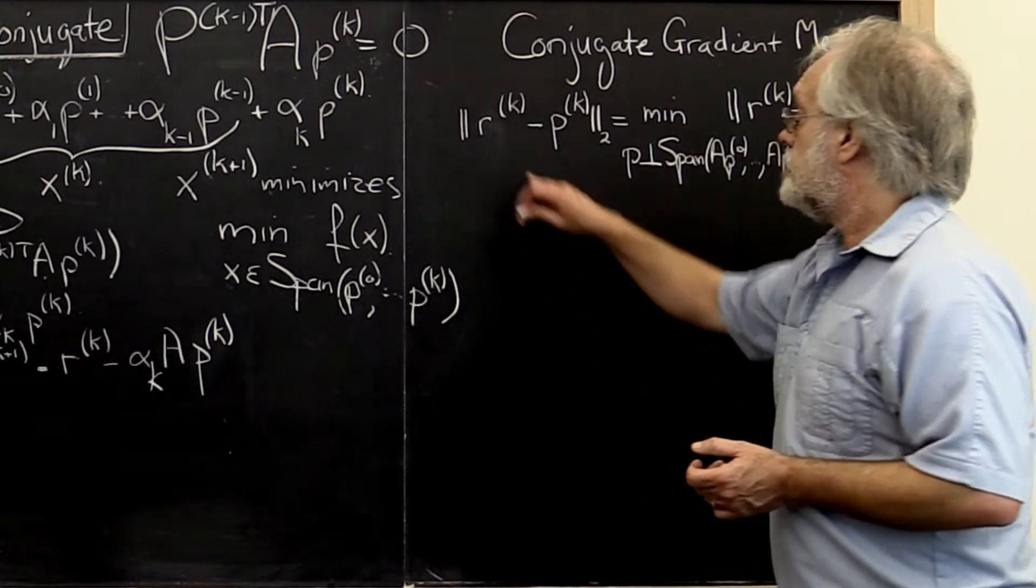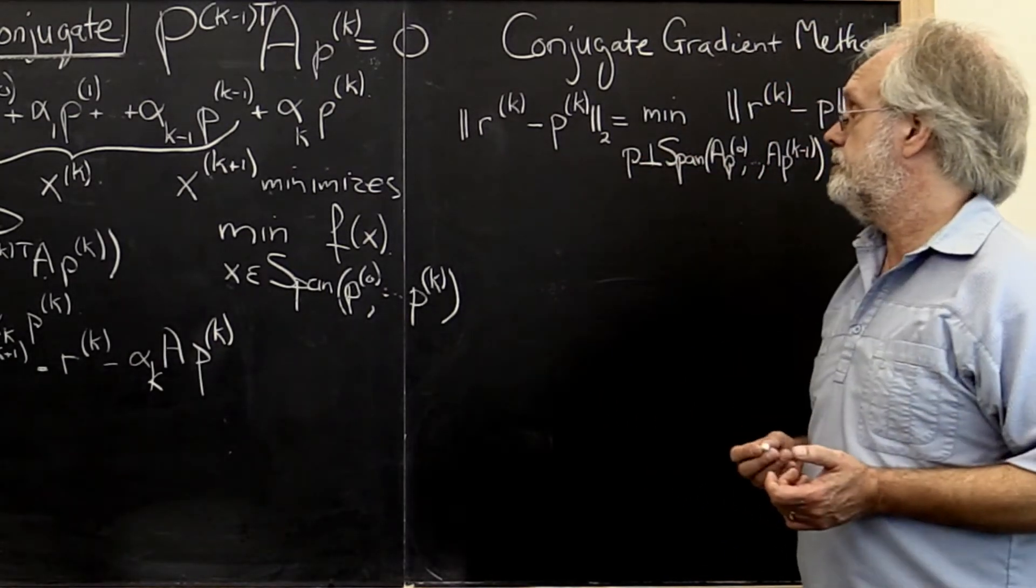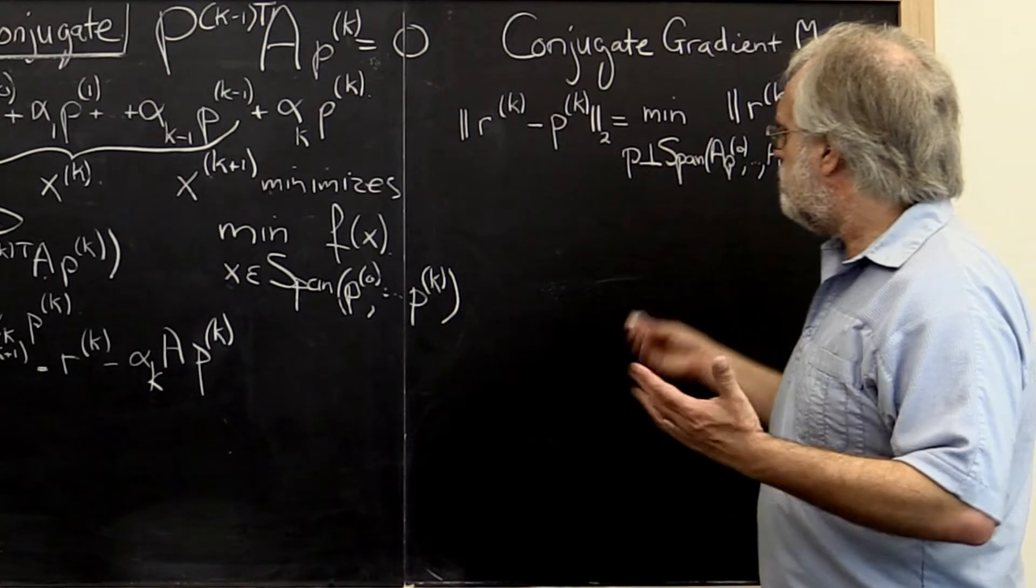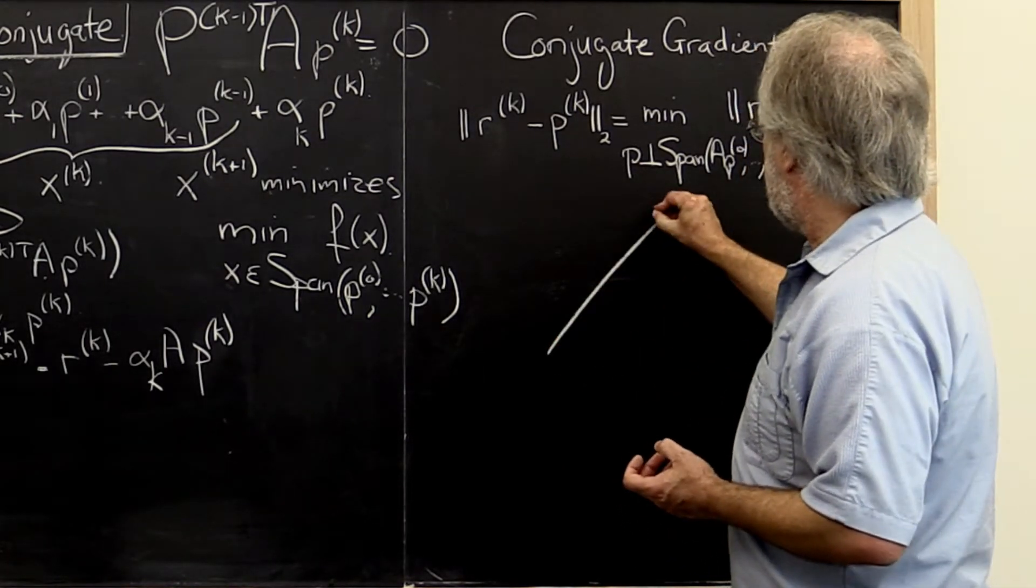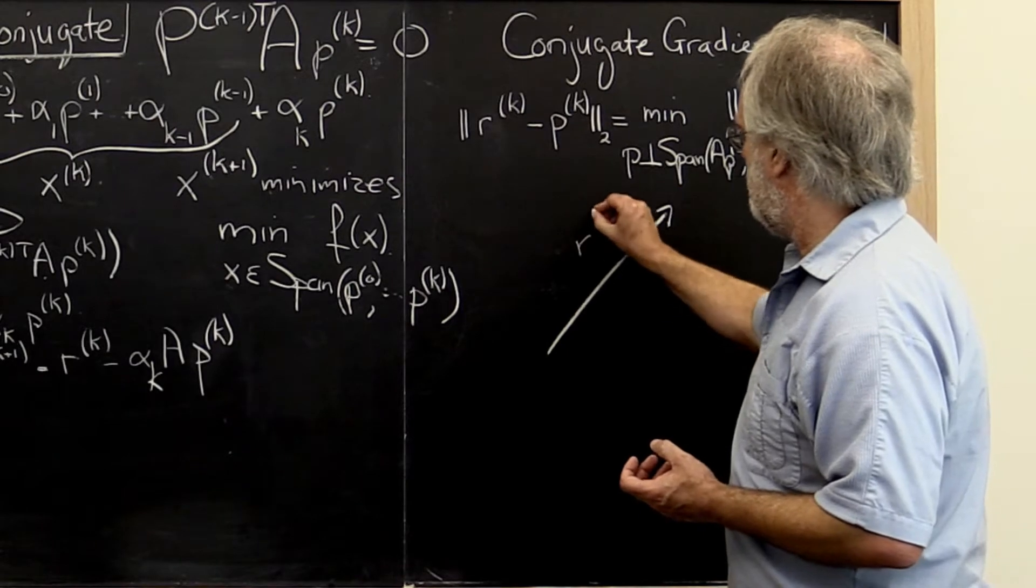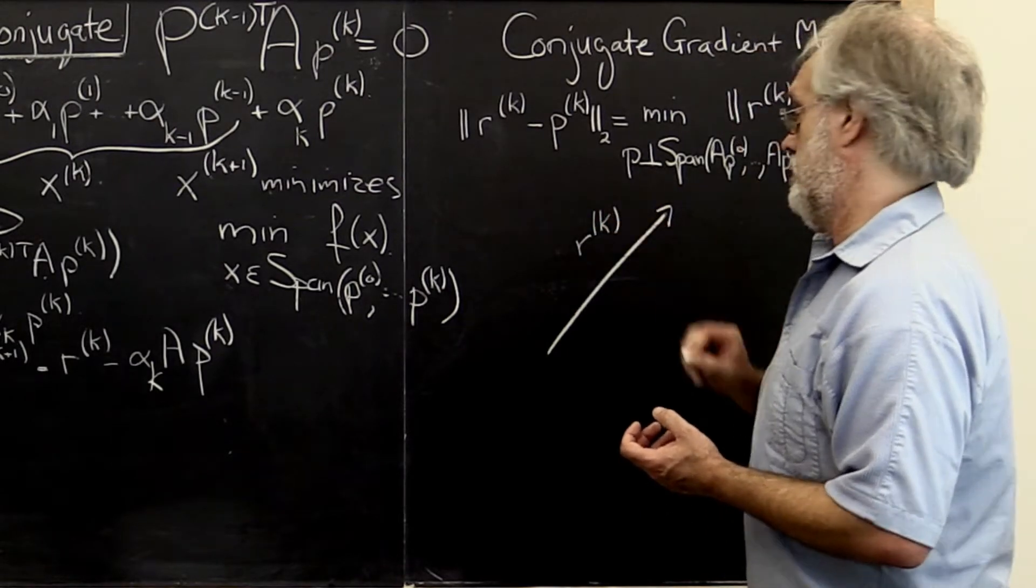And it all starts by looking at this right here. This picture will explain. We have our current direction Rk. Sorry, our current residual Rk.